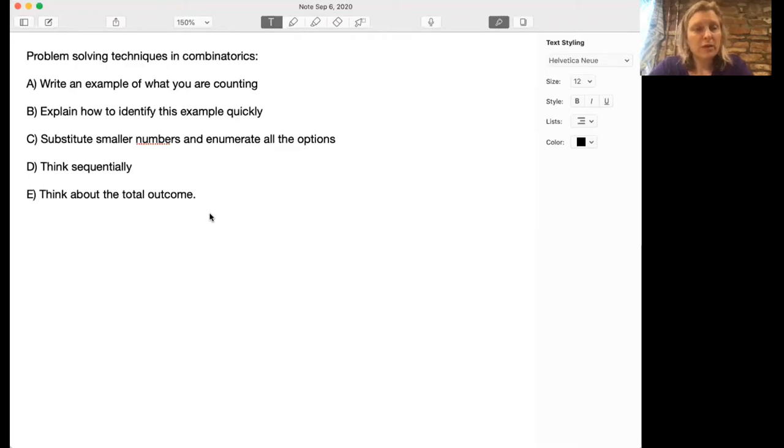The last two I think are some of the most important. One of them is to think, how would I write down this example a step at a time? First making a choice, then making another choice, then making another choice. And that's quite different from the last possible problem-solving technique, which is to instead think about the total outcome. The difference between D and E can often be summarized as, does the order of your objects matter? If yes, then thinking sequentially is going to make a big difference.